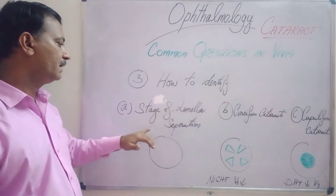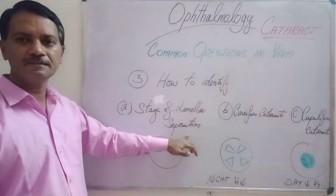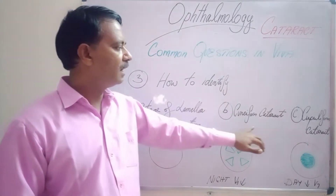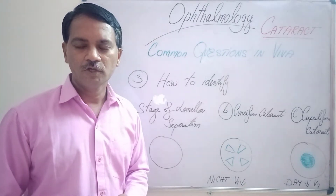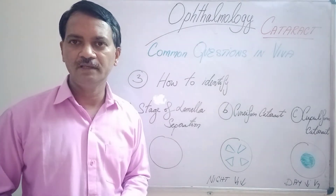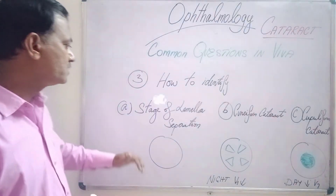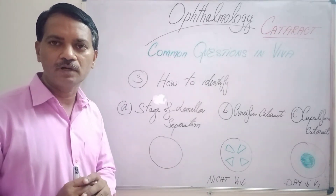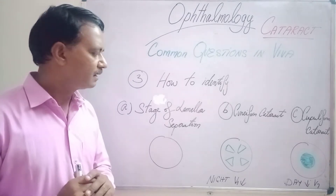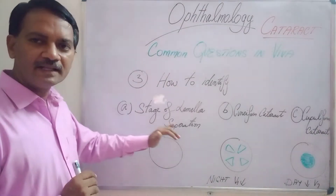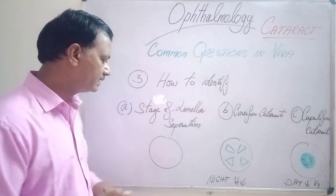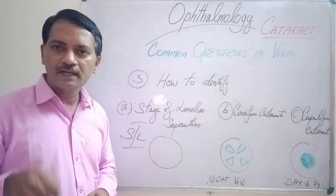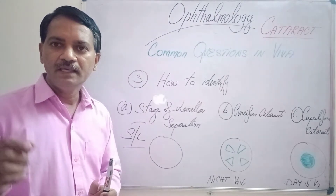The next common question a student should be able to answer is: how to identify the stage of lamellar separation in cortical cataract? When you examine the stage of lamellar separation using only a torch light, you will not find anything in the lens — the lens will look normal, black in color. To identify lamellar separation, the eye has to be examined under the slit lamp to look for water clefts between the cortical fibers.